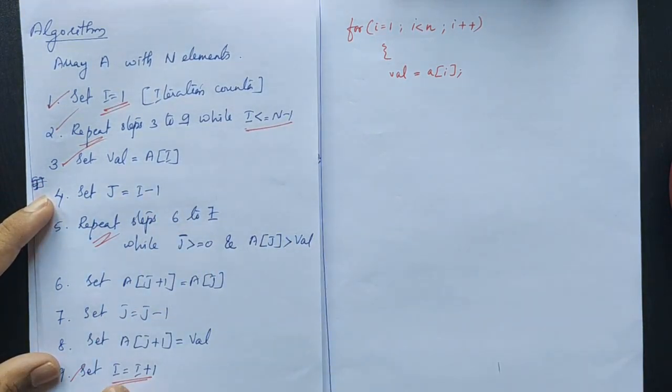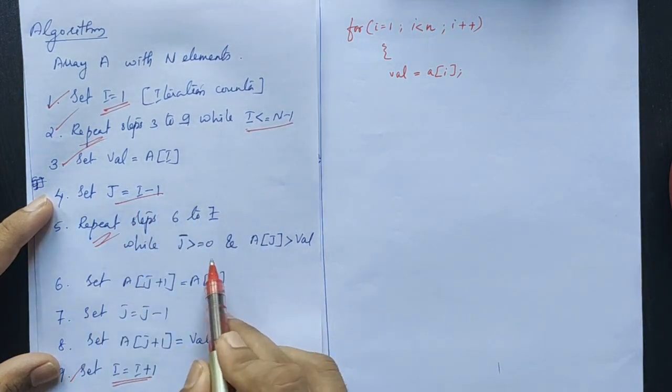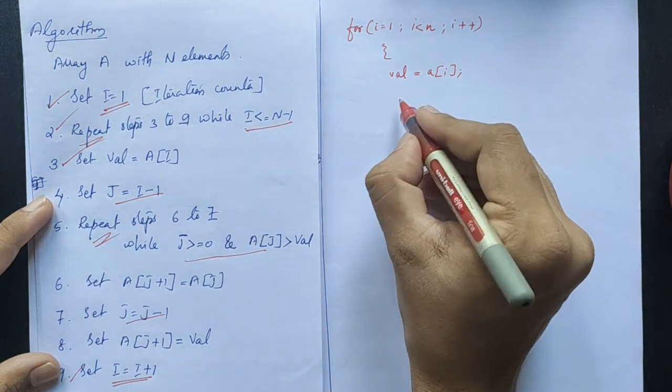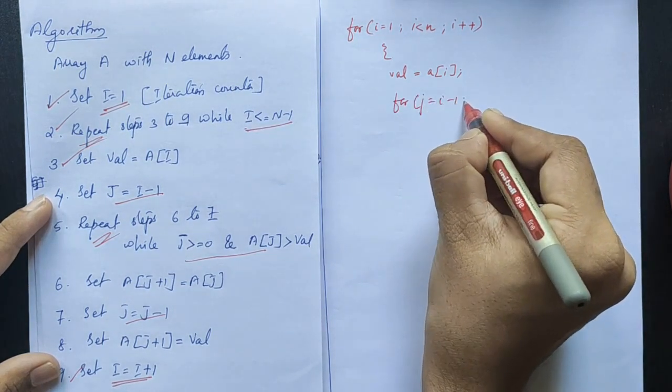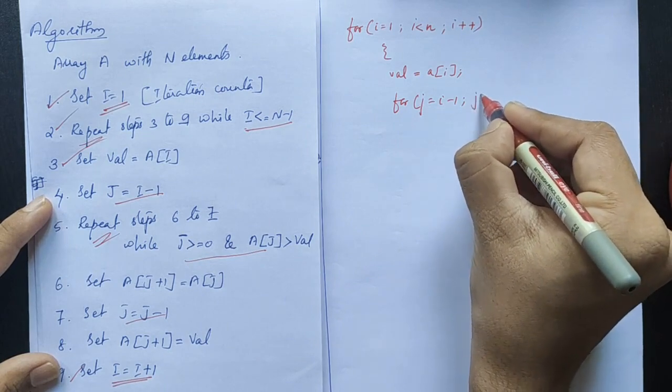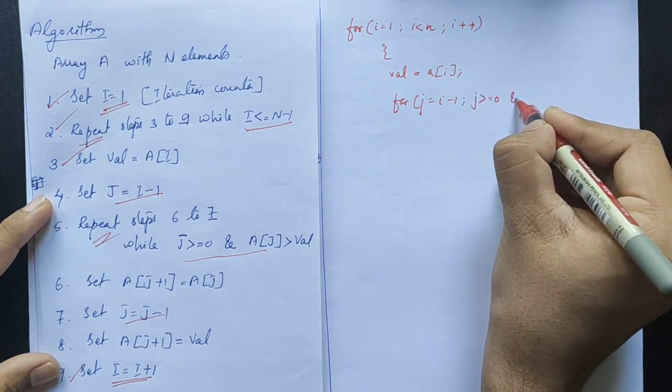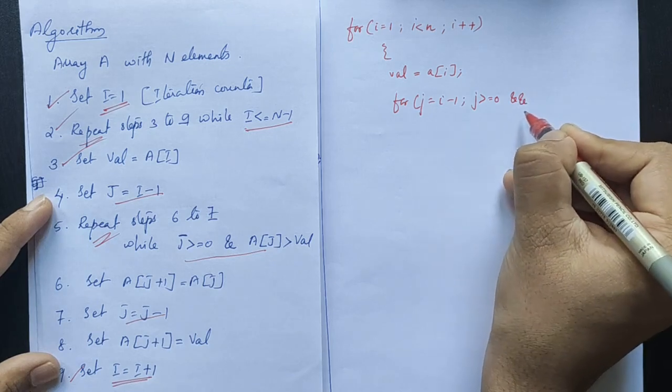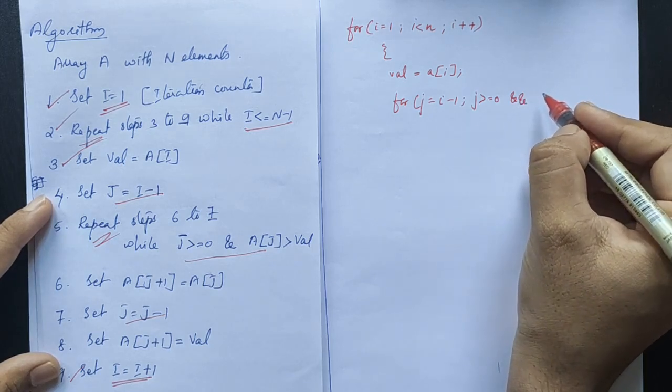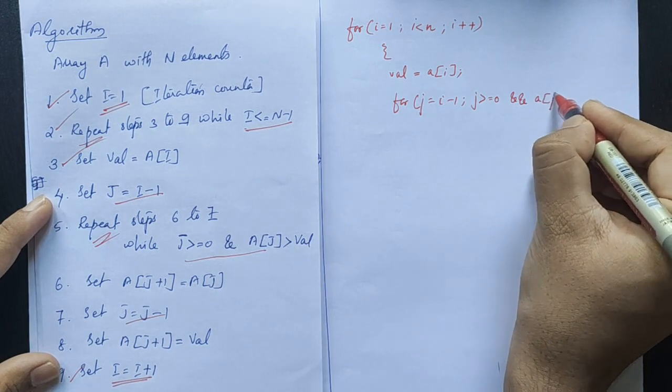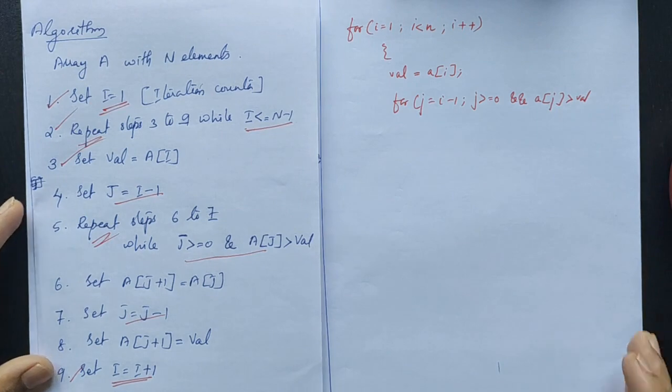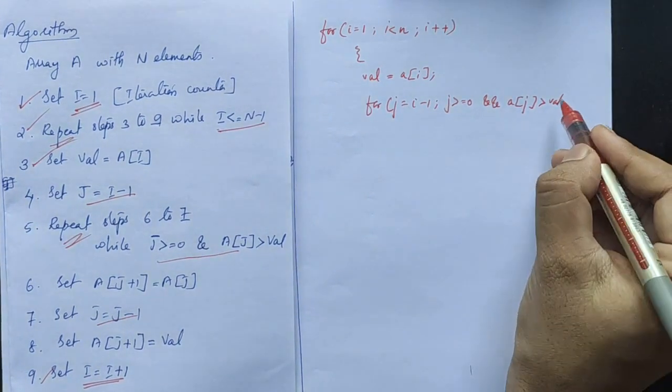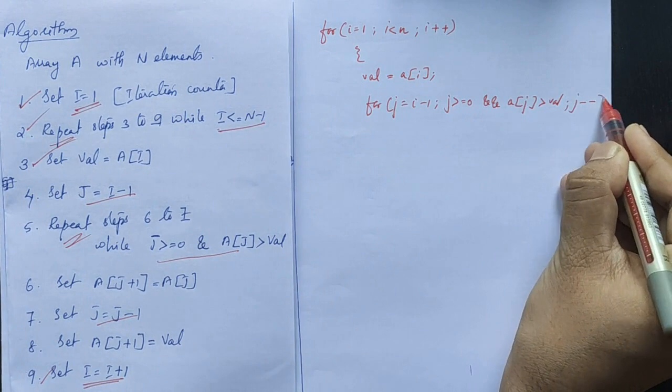The condition: j equal to i minus 1. The condition j greater than or equal to 0 and a of j greater than val. If j greater than val, continue and decrement j minus minus.